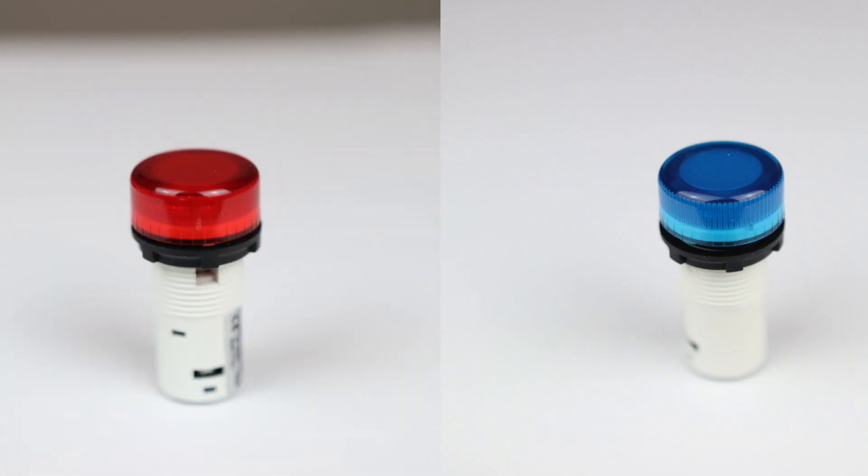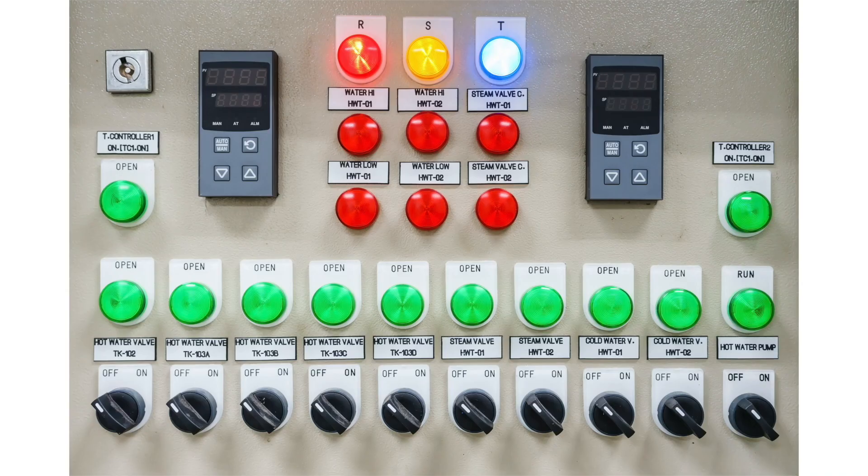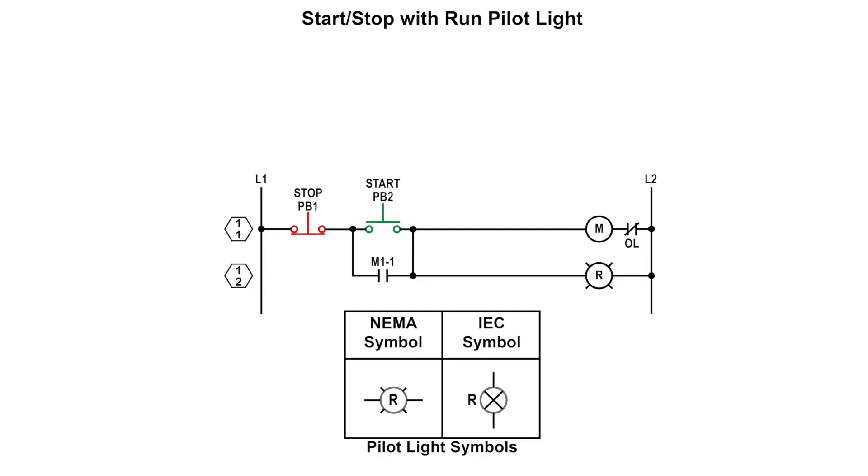The last control device we will cover today is the pilot or indicator light, as I mentioned earlier. Pilot lights are used to show a visual status of a process or operation. They can be used to indicate a fault or show the status of a motor.